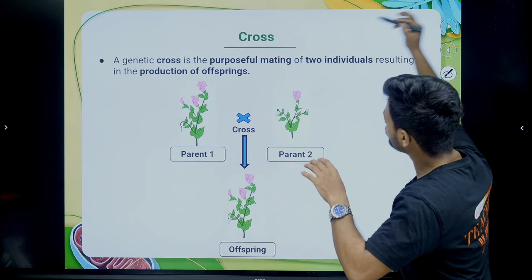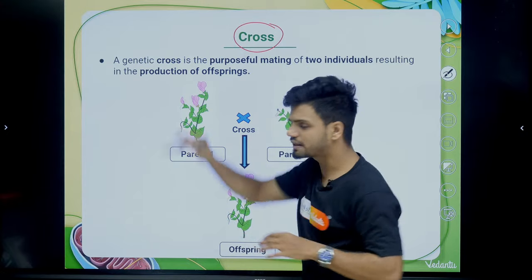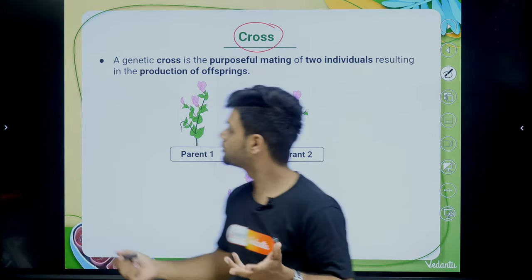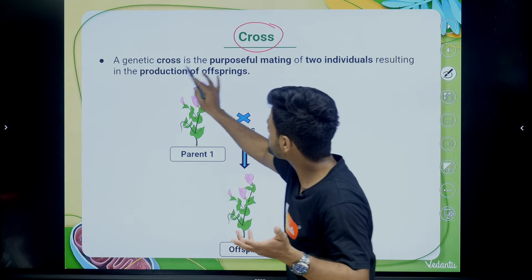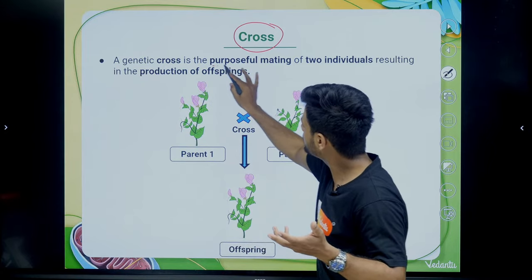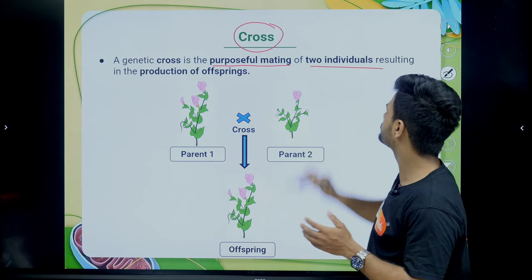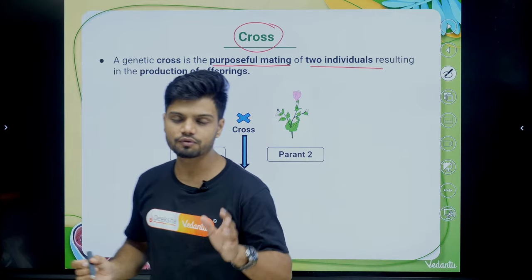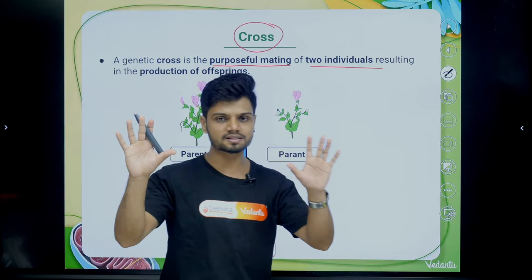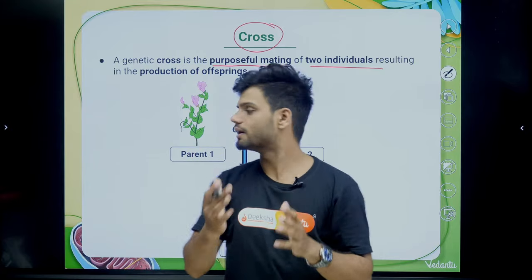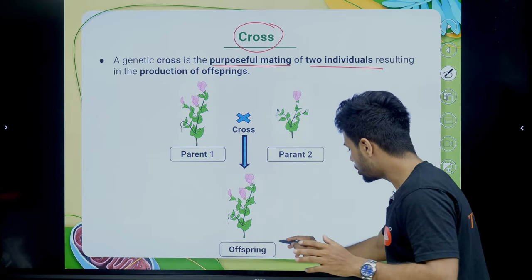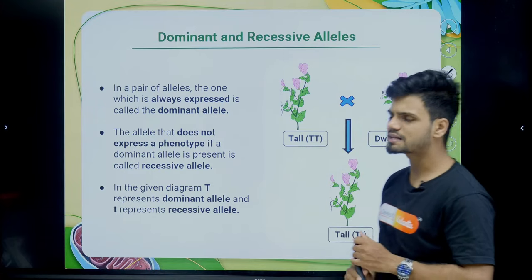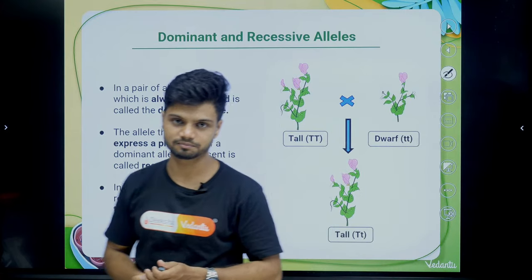What is a cross? A genetic cross is the purposeful mating of two individuals resulting in the production of an offspring. We have two different plants; they undergo mating and produce an offspring — this is called a cross.